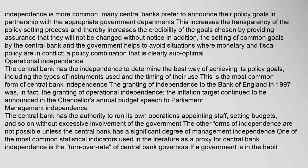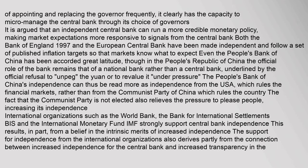The granting of independence to the Bank of England in 1997 was, in fact, the granting of operational independence; the inflation target continued to be announced in the Chancellor's annual budget speech to parliament. Management independence: the central bank has the authority to run its own operations — appointing staff, setting budgets — without excessive government involvement. One of the most common statistical indicators used as a proxy for central bank independence is the turnover rate of central bank governors; if a government frequently appoints and replaces the governor, it clearly has the capacity to micro-manage the central bank. It is argued that an independent central bank can run a more credible monetary policy, making market expectations more responsive to signals from the central bank.